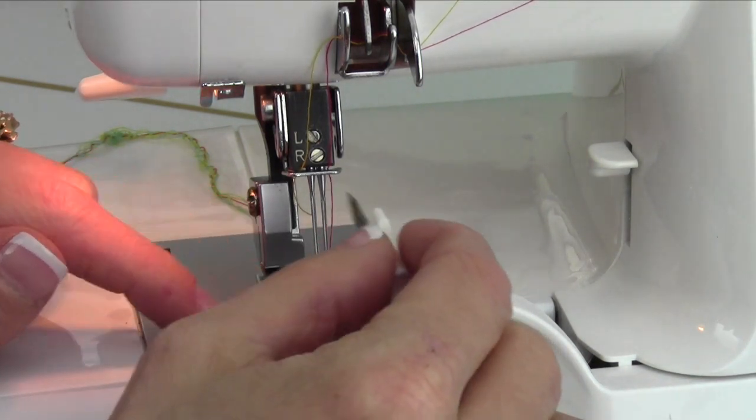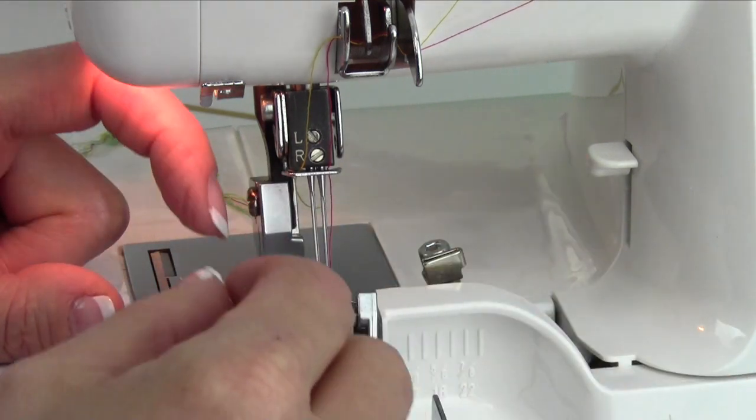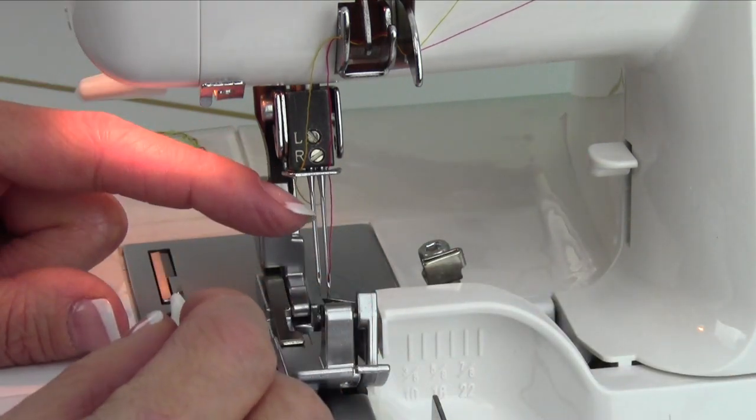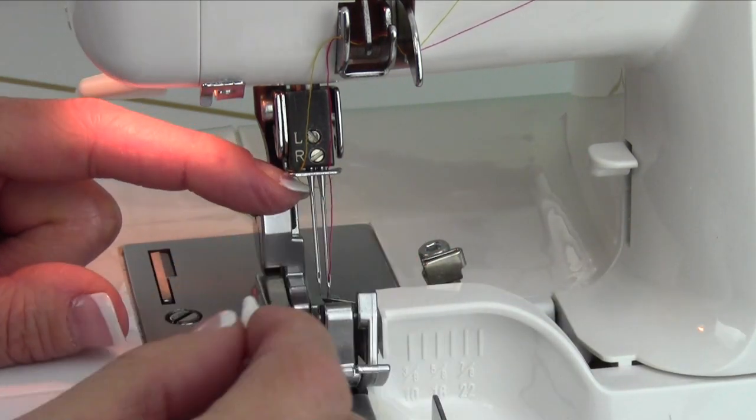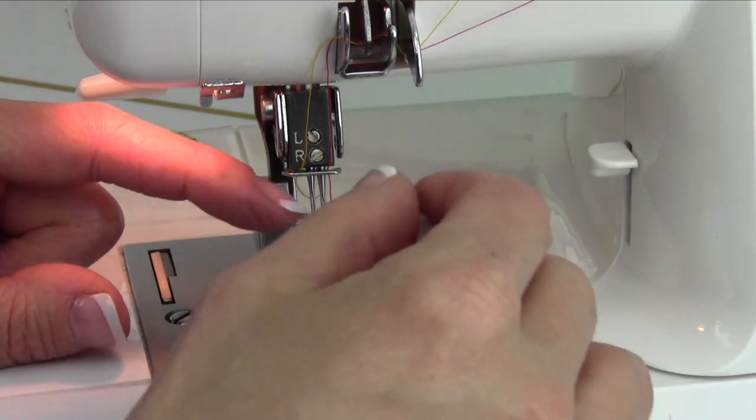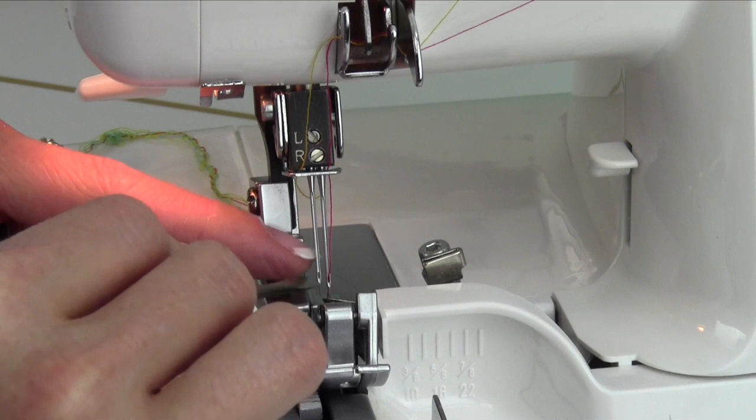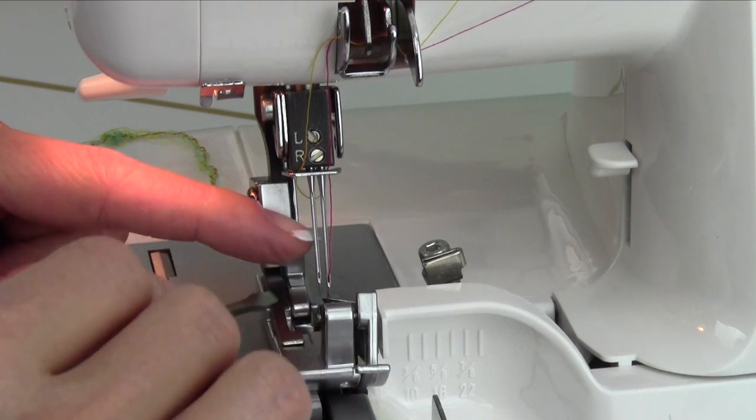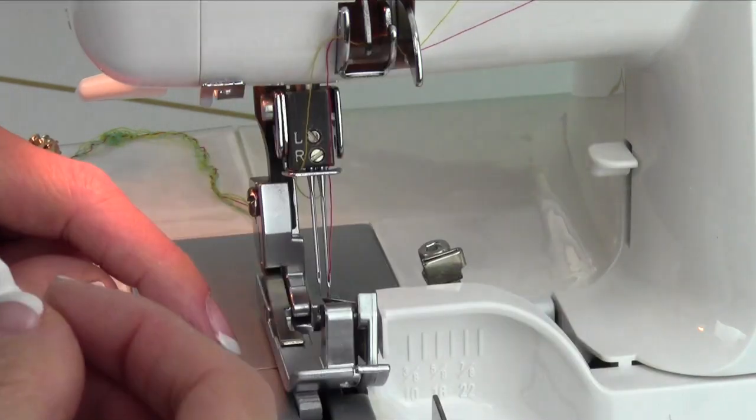Sometimes what I do is if I am using just the right needle and I'm moving to just using the left needle, I'll put the left needle in, check the height, and then remove the right one at the end. That way I always have a visual check while I'm switching the needles from one side to the other.